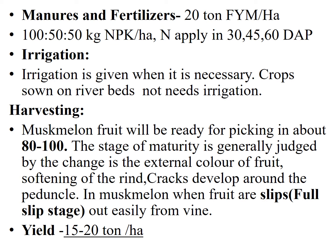In musk melon, when the fruit matures, it cracks around the peduncle at the base of the fruit and slips out easily from the vine, leaving a circular scar — this is called the full-slip stage. In netted musk melon, the green color between the net changes to yellow, yellow-green, or brown, and the net changes to dirty white — these are the maturity symptoms of the musk melon crop. Harvesting should be done at full-slip stage for the local market, and at half-slip stage for distant markets.